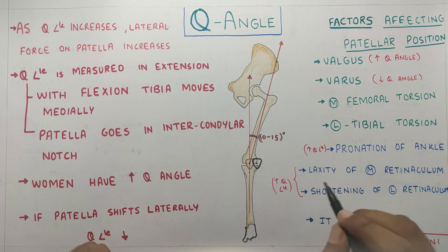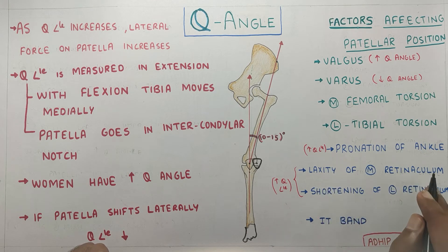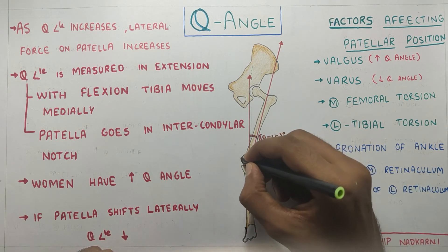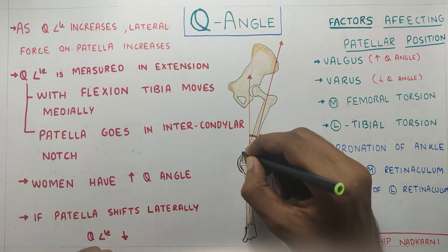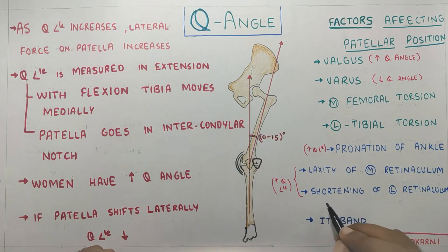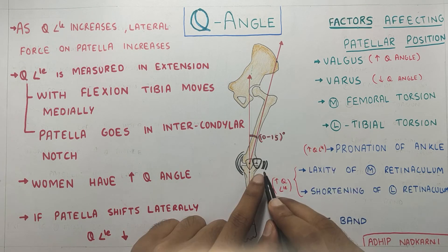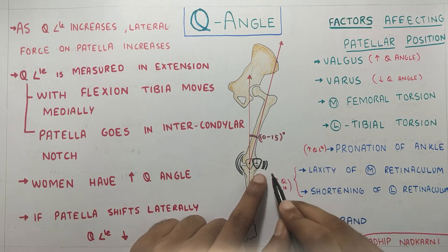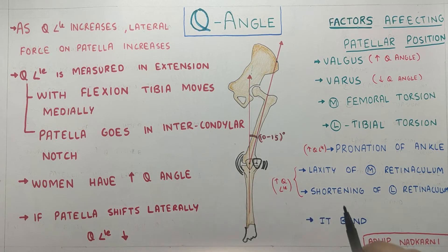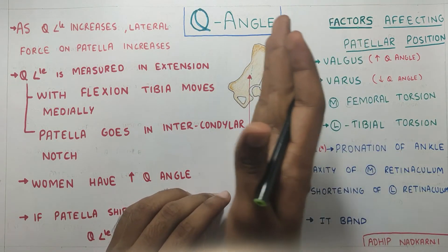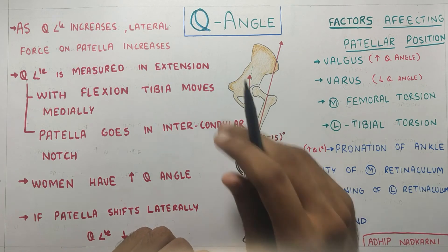Other factors that increase Q angle include laxity of the medial retinaculum and shortening or tightening of the lateral retinaculum. Additionally, if the IT band becomes taut, it can pull the patella laterally and also affect the Q angle.